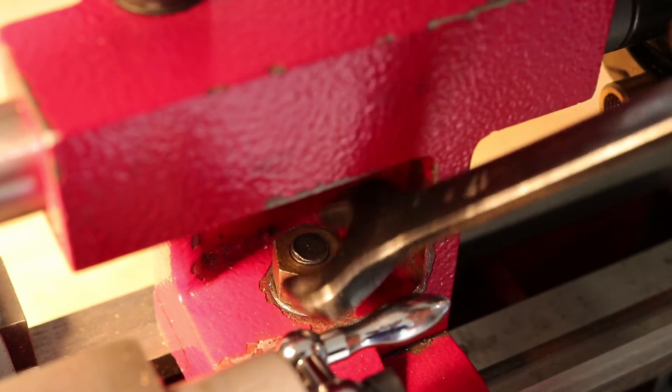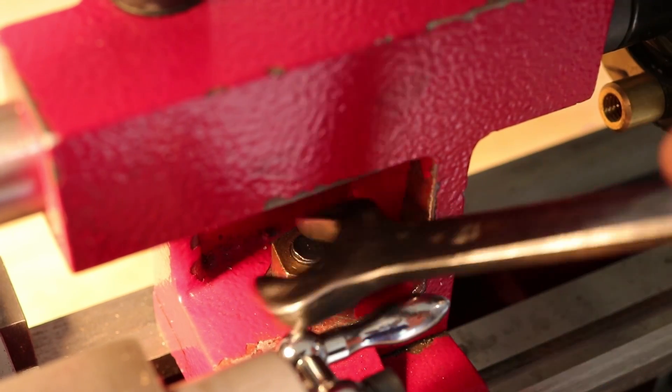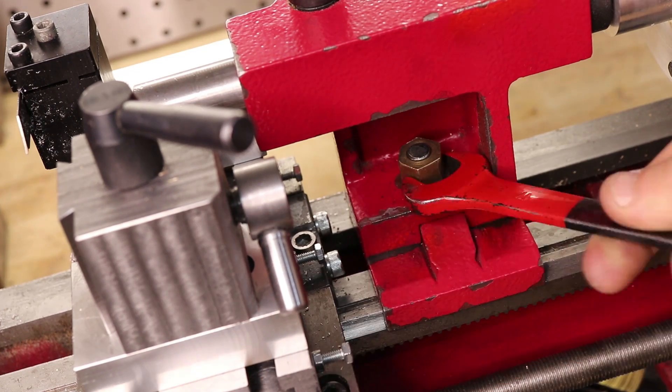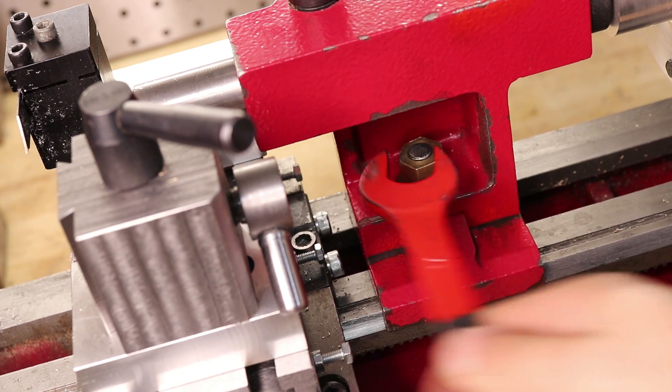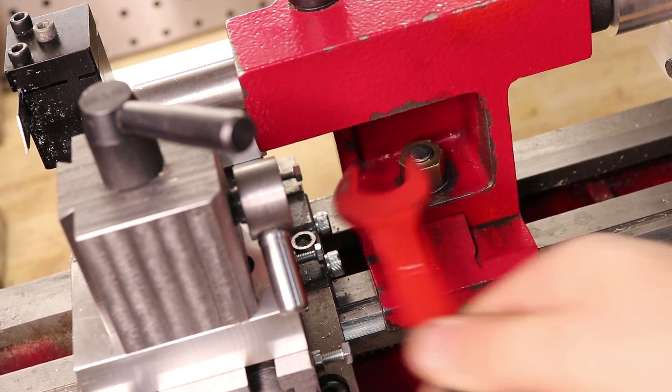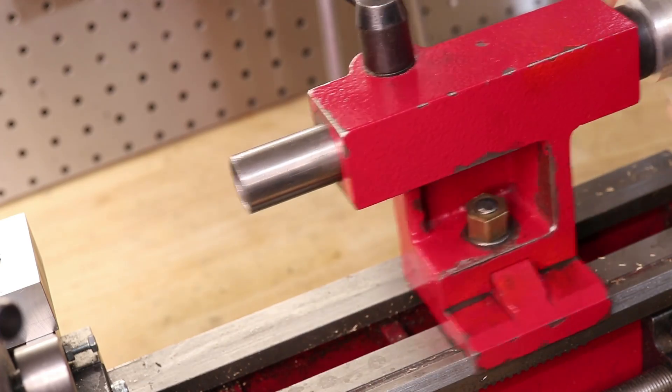But on mini lathes there are many occasions where accessing the locking nut can be very difficult, and if you're doing a job where you need to move the tailstock around a lot, you'll find that the time spent locking and unlocking the tailstock can really add up.